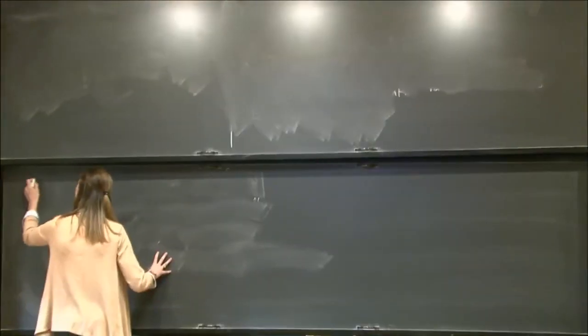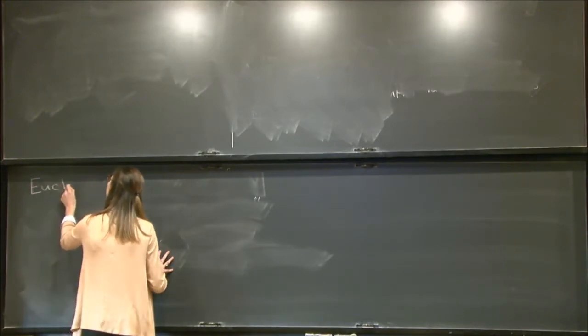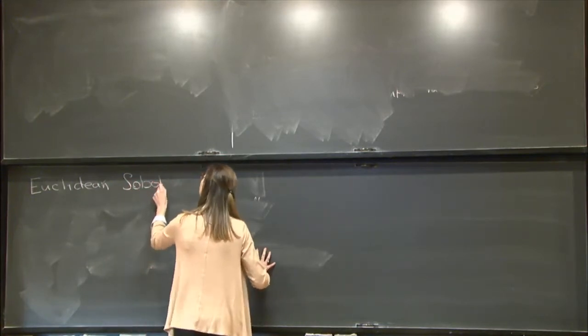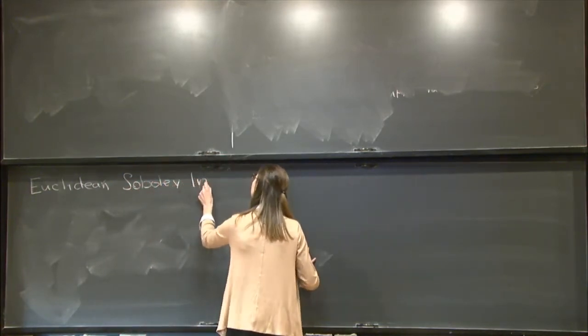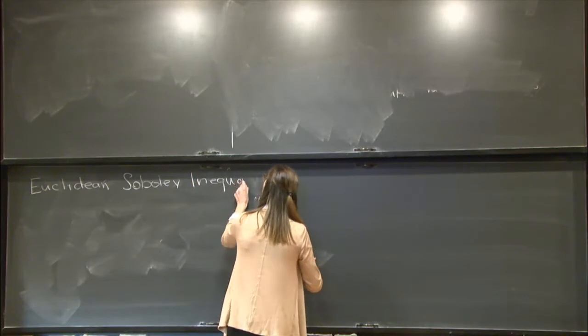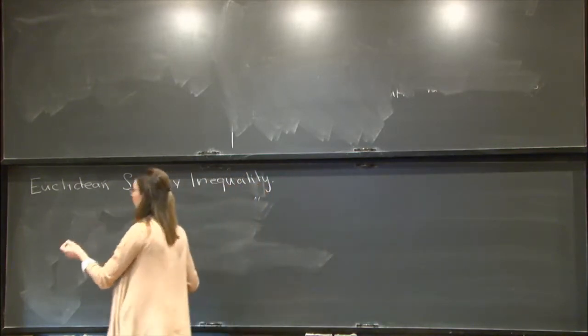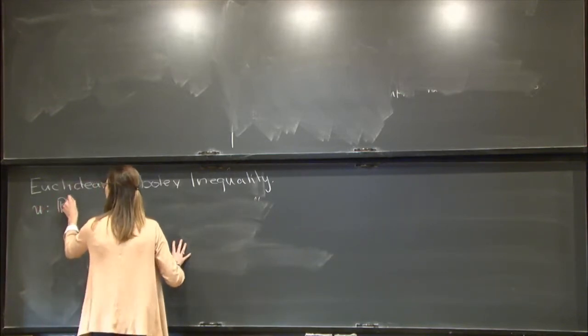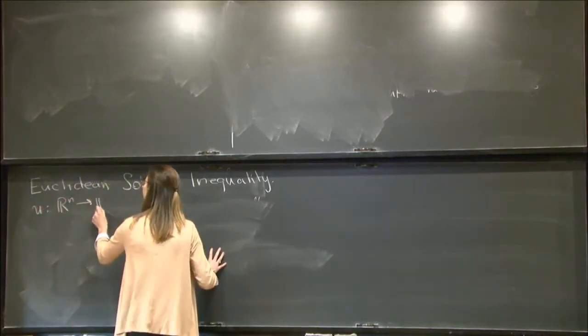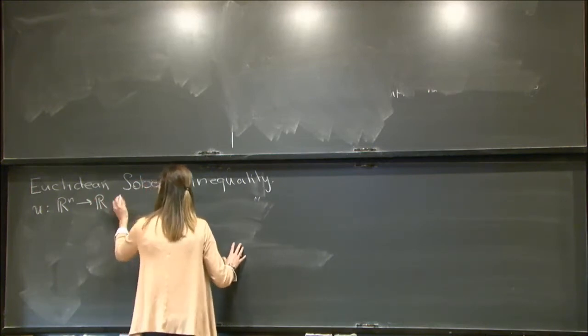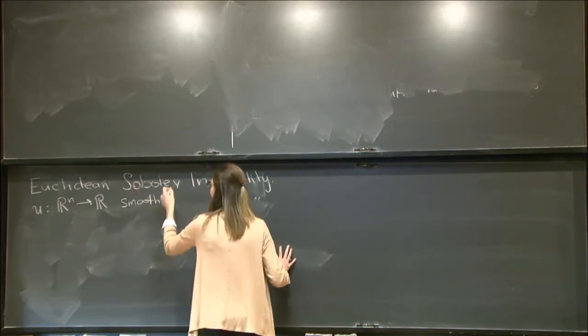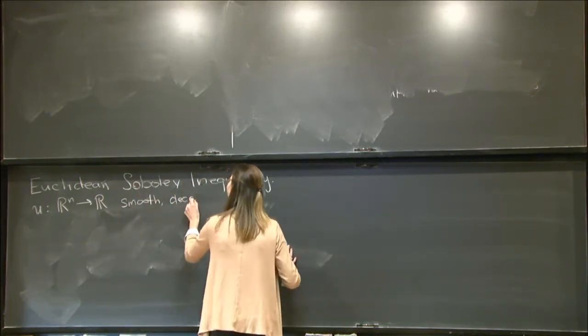Today I want to present the problem by way of one particular example, and so this example will be the Euclidean Sobolev inequality. What this inequality says is that if we're given a function u that maps from n-dimensional Euclidean space to the real line which is smooth and decays sufficiently at infinity,